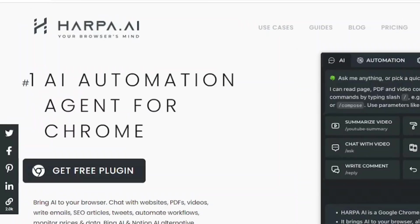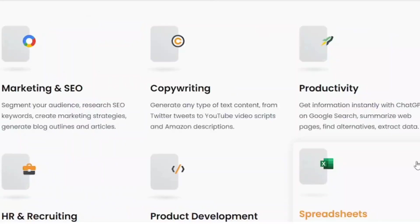Harpa.ai is a Chrome extension which is actually integrated with a plugin for ChatGPT. Talking about its use cases: marketing and SEO, copywriting, productivity, HR and recruiting, product development, and spreadsheets are some of the use cases of Harpa AI.